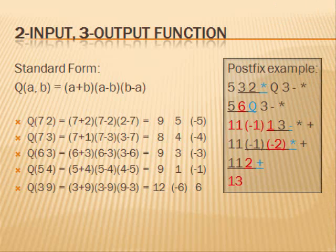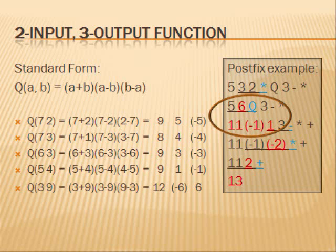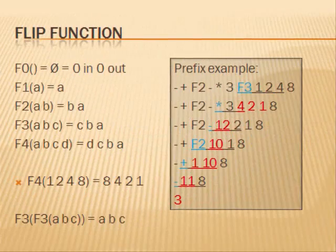Here, I define a two-input, three-output function named q. The first output of q of a, b is a plus b. The second output is a minus b. The third output is b minus a. Therefore, q of 7, 2 is 7 plus 2, 7 minus 2, 2 minus 7. 7 plus 2 is 9, 7 minus 2 is 5, and 2 minus 7 is negative 5. In the postfix example, 5 and 6 are inputted into function q to produce 11, negative 1, and 1.